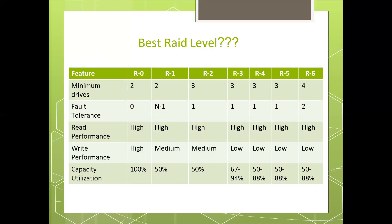In the case of RAID 6, the minimum number of drives required is four. Fault tolerance and read performance is high in all cases, but write performance is low for RAID 3, RAID 4, RAID 5, and RAID 6. For RAID 1 and RAID 2 it is medium, and for RAID 0 it is high.